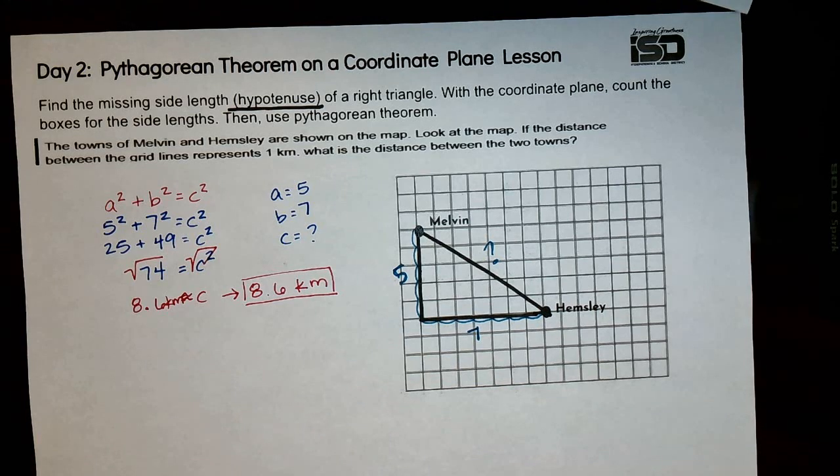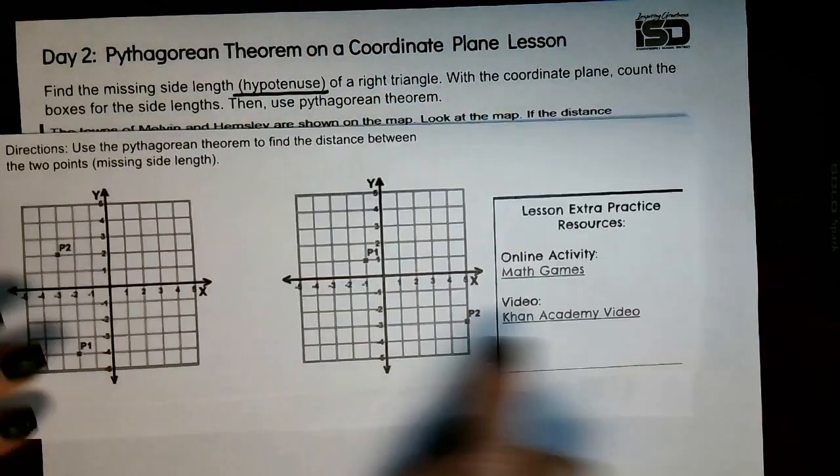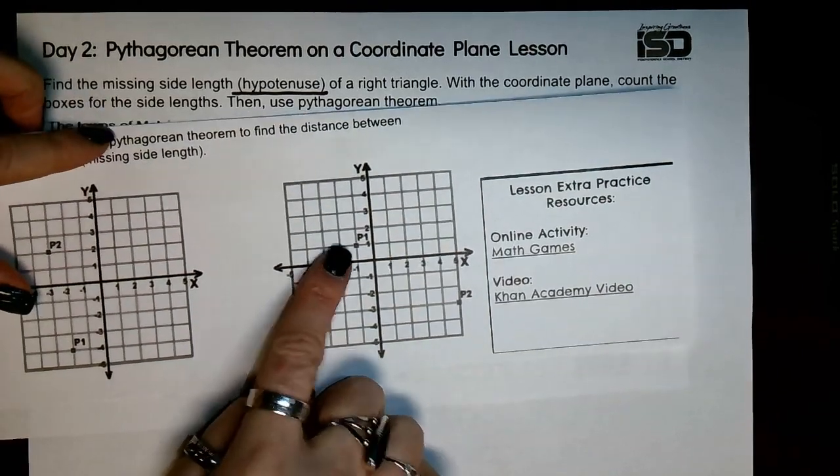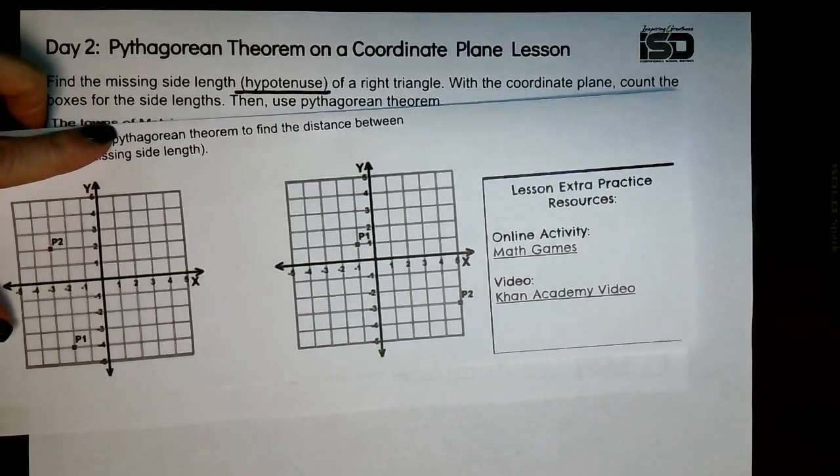So on that same page, you do have a couple examples. Now these are not given as a situation, they are just given on a coordinate plane, but you do the exact same process. You connect those points and create those right triangles.